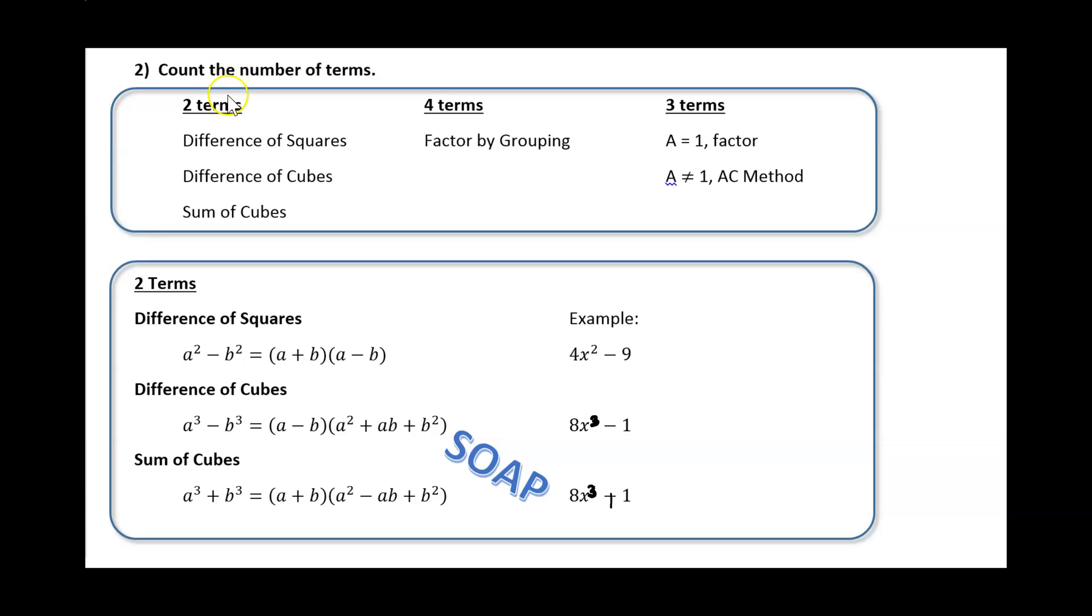If I have two terms, it could be a difference of squares, it could be a difference of cubes, or it could be a sum of cubes. There is no such thing as a sum of squares. Alright, so let's look at the formulas.